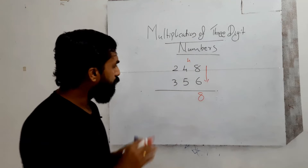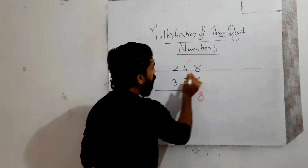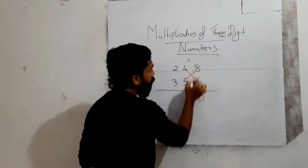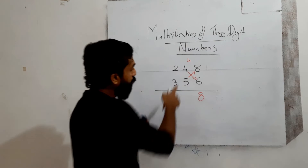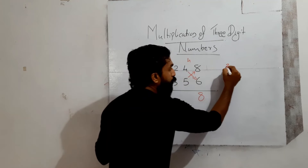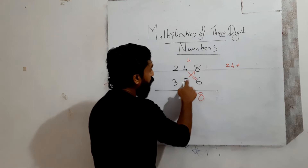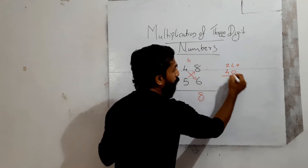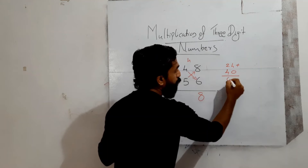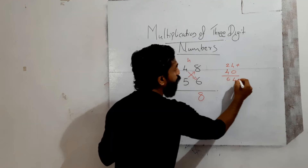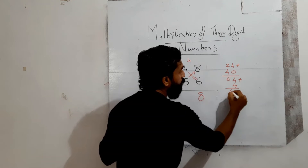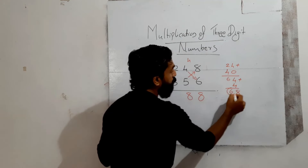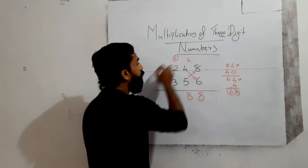Next cross multiplication: 6 into 4 is 24, plus 8 into 5 is 40. So 24 plus 40 equals 64. Add the carry of 4: 64 plus 4 equals 68. Write 8 here, carry over 6.